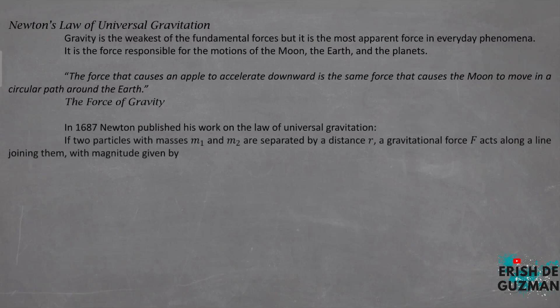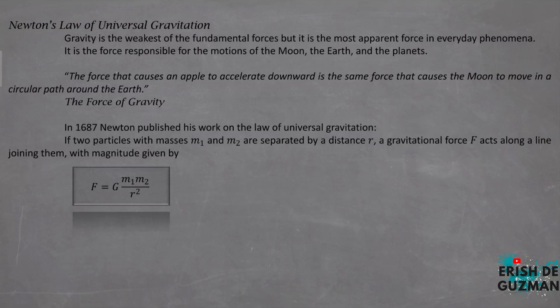If two particles with masses M1 and M2 are separated by distance r, a gravitational force F acts along a line joining them, with magnitude given by this equation: Force equals the gravitational constant G times M1 times M2 over r squared. M1 and M2 are the masses of the two objects, r is the distance between them, and G is a constant with a value of 6.673 times 10 raised to negative 11 newton times meter squared over kilogram squared — the constant of universal gravitation.